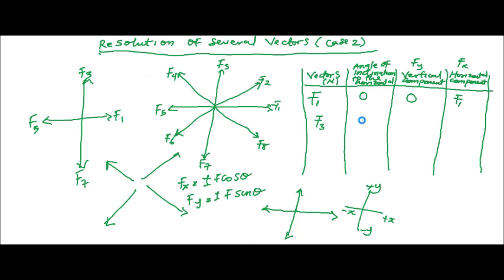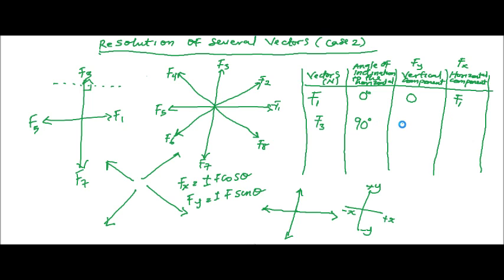For F3, the angle of inclination of F3 to the horizontal is 90 degrees. If you draw a broken horizontal line here, F3 is inclined to the horizontal at 90 degrees. It's not inclined — it's going straight up. So the angle of inclination to the horizontal is 90 degrees. F3 only has a component on positive Y, so the vertical component is F3 and the horizontal component is zero.